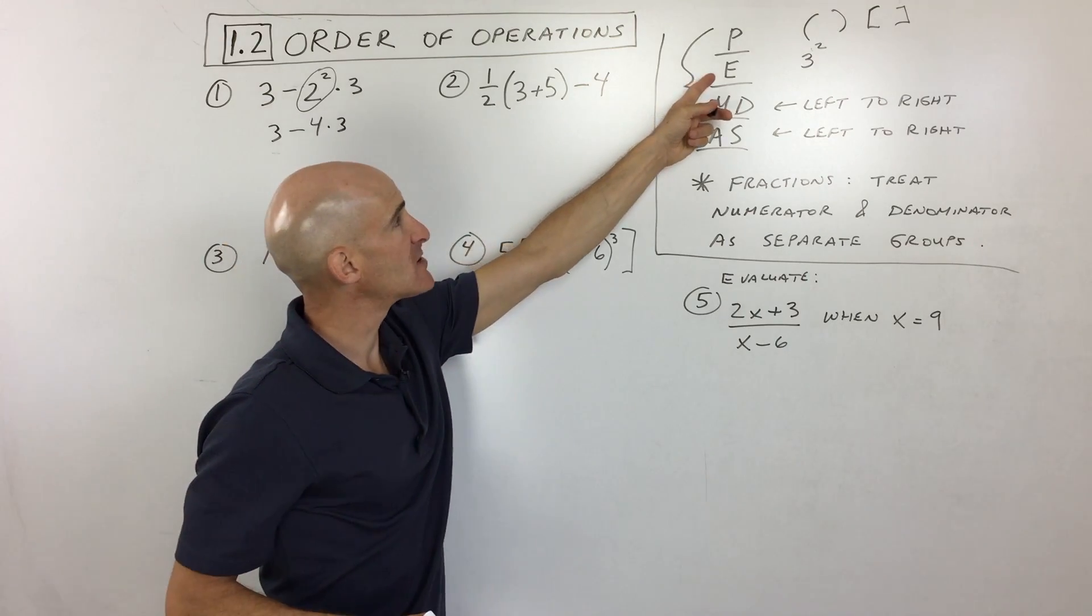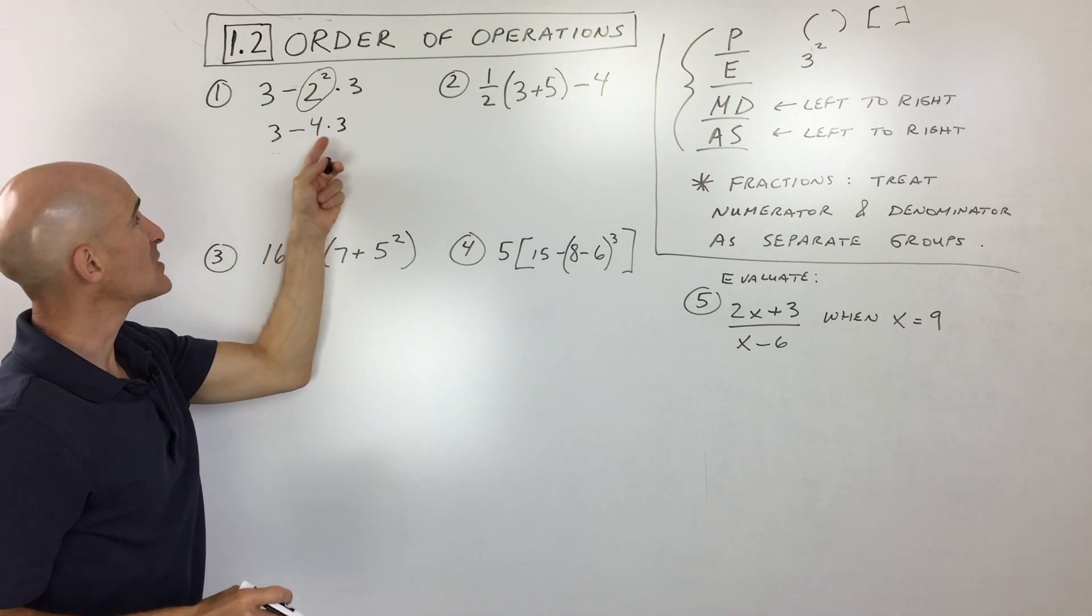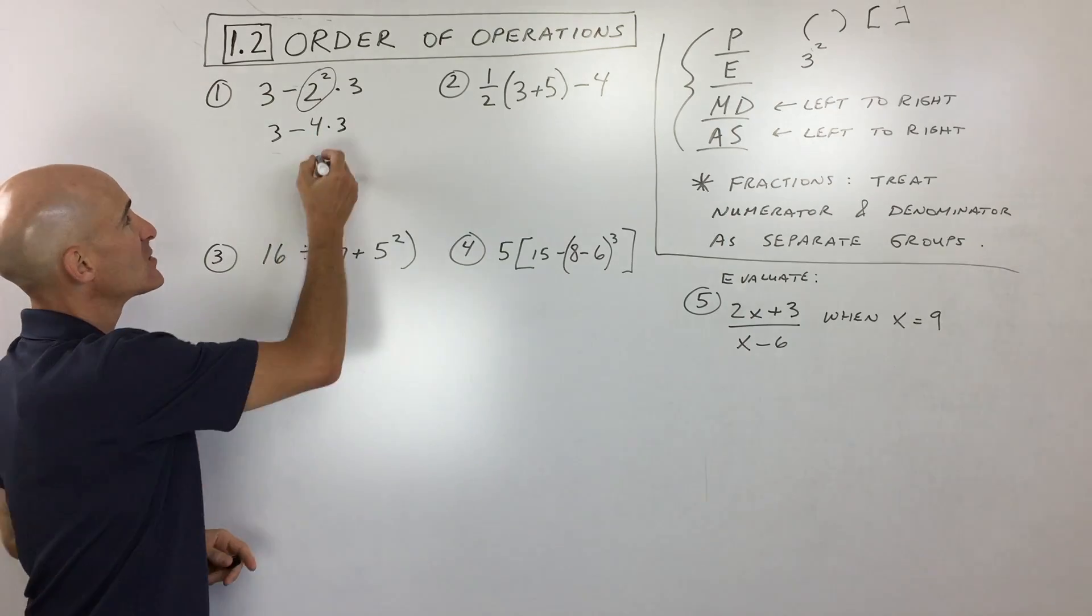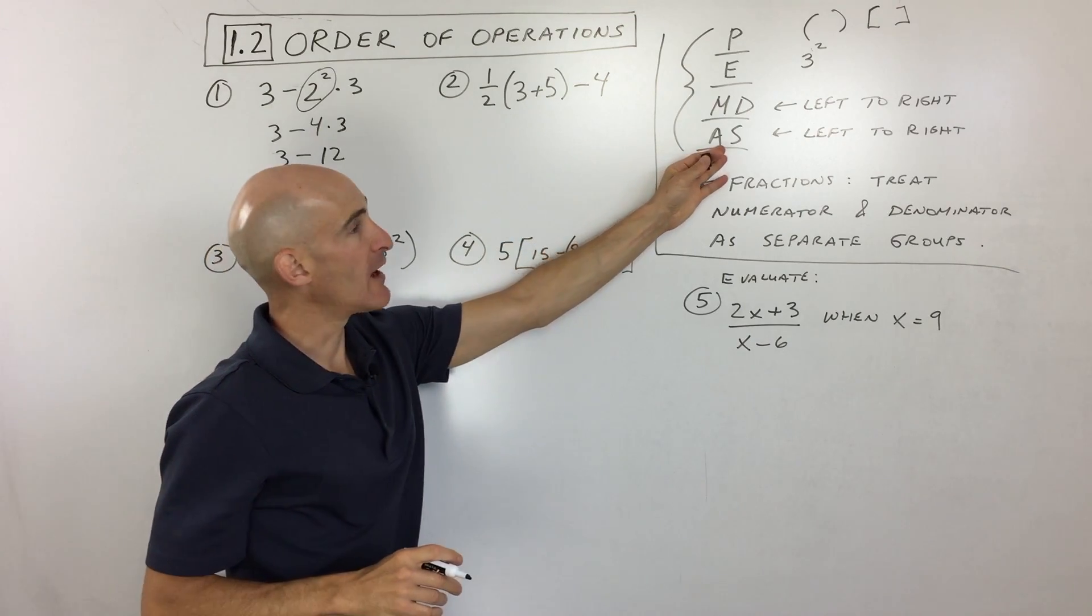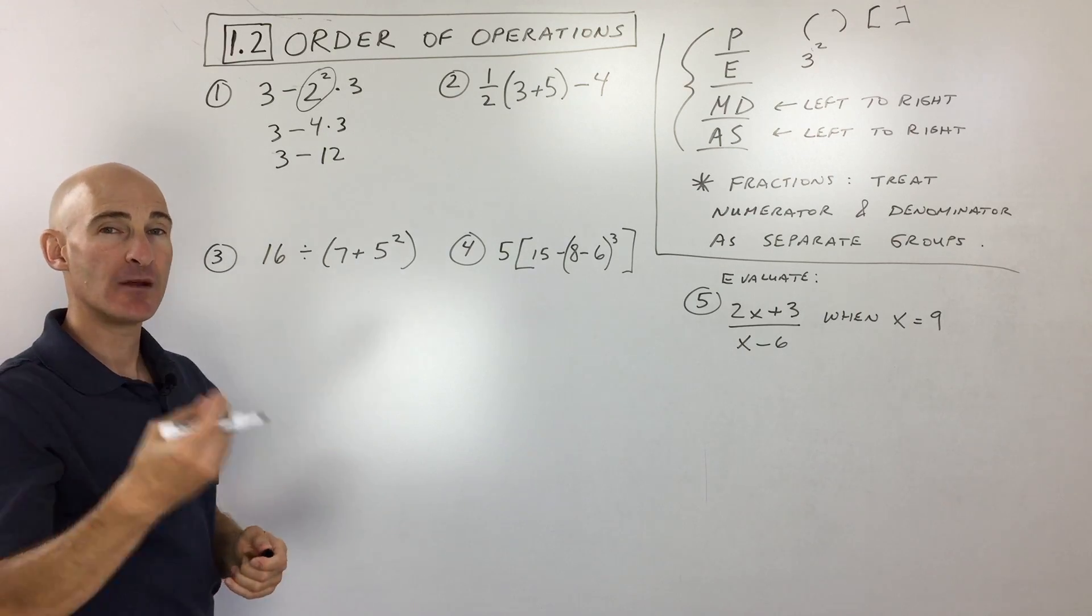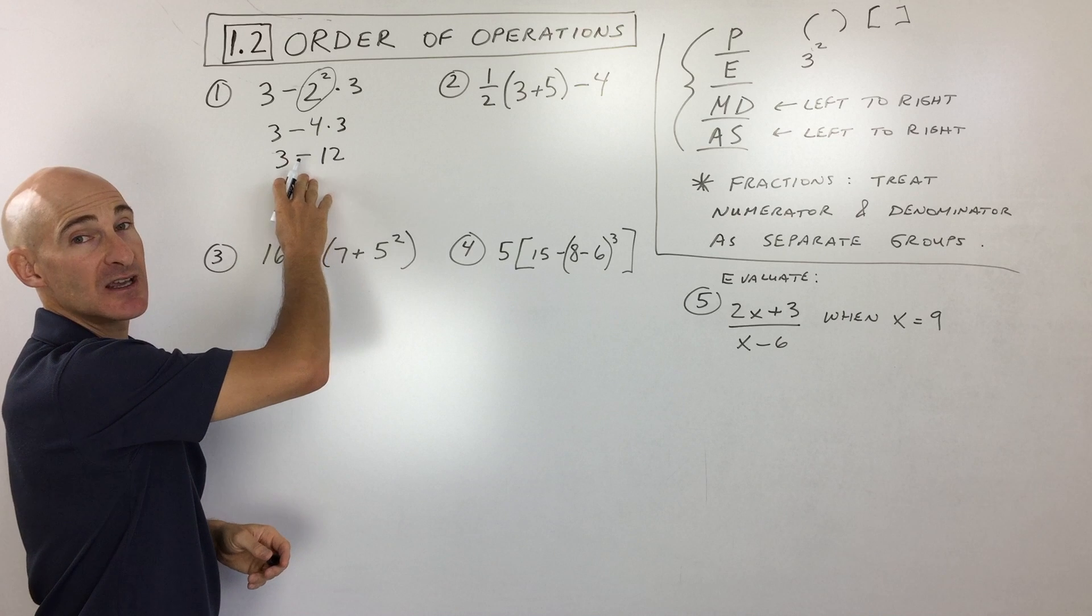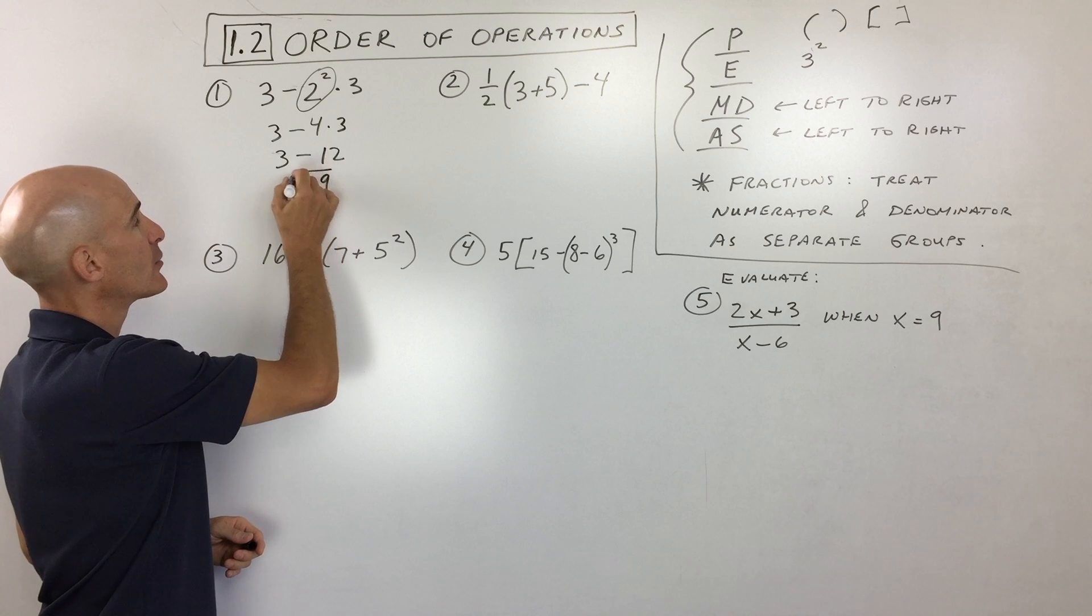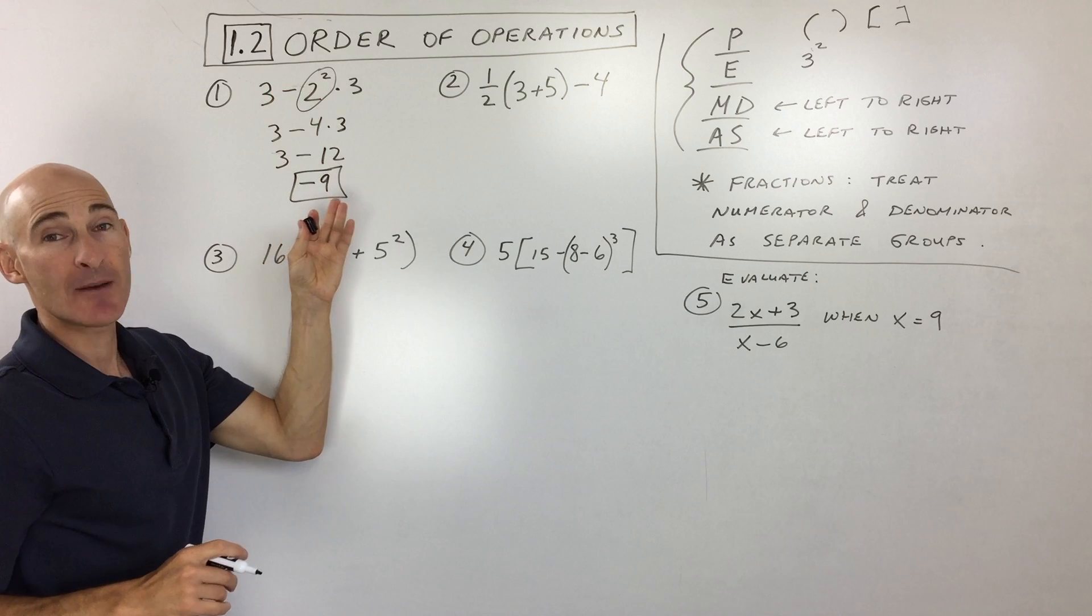I'm bringing down everything I didn't use in the previous step. Now we did the exponents and there weren't any parentheses. Now we're down to multiplying and dividing. This dot means these two are multiplied together. 4·3=12. Then lastly, we're left with adding and subtracting. We've got 3-12. In a future lesson we'll talk about subtracting positive and negative numbers, but for now, that's -9. That's how you do it, step by step.